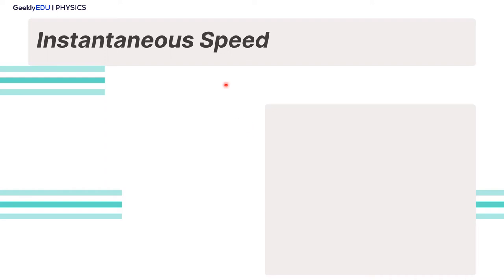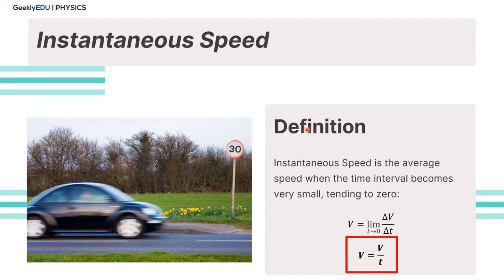How about instantaneous speed? You can think of instantaneous speed as the average speed when the time interval becomes very small, tending to 0. The average speed equation is almost the same, but in this case the time interval tends to 0. If you look at your car's speedometer, that equipment shows you exactly this — the instantaneous speed.